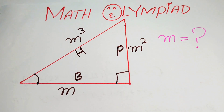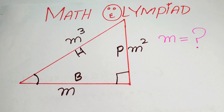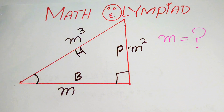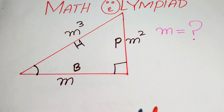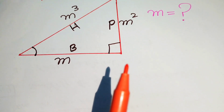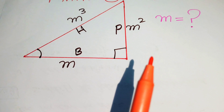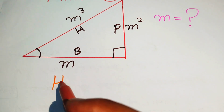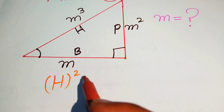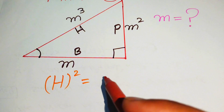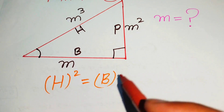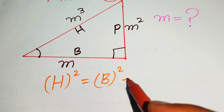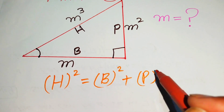Another thing we know about this right triangle is that the Pythagorean theorem holds in it. The Pythagorean theorem states: hypotenuse squared equals base squared plus perpendicular squared.